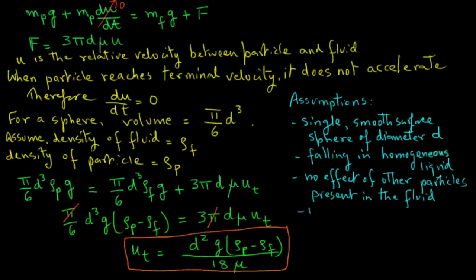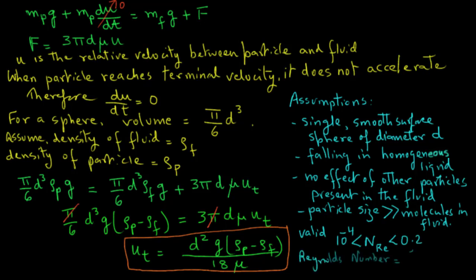Also, this particle size is much larger than the molecules in the fluid, which is a pretty reasonable assumption. We also note that this equation is valid for a Reynolds number larger than 10 raised to the power minus 4 and less than 0.2, where Reynolds number is the density of the fluid times terminal velocity ut times d divided by mu. So this expression for terminal velocity is limited to small size particles, and we will examine the use of this equation for certain examples in some of the following tutorials.